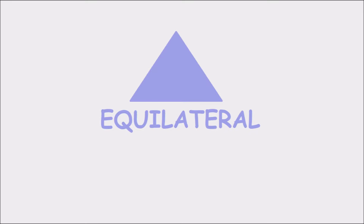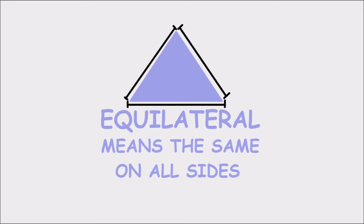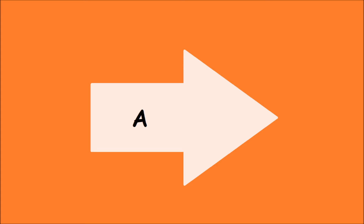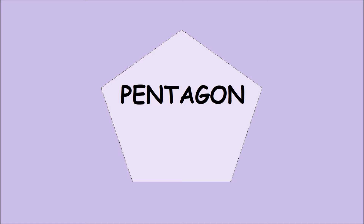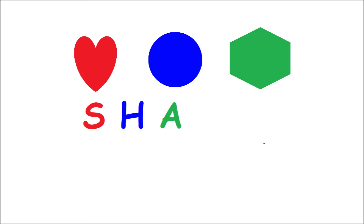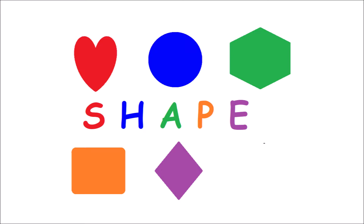Equilateral means the same on all sides. S is for star, H is for hexagon, A is for arrow, P is for pentagon, E is for equilateral triangle — S, H, A, P, E spells shape!